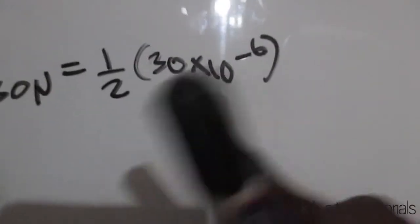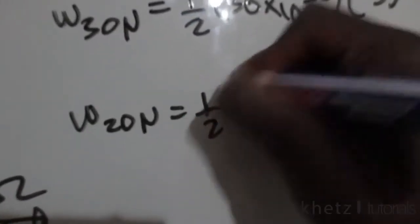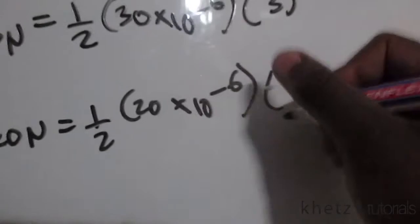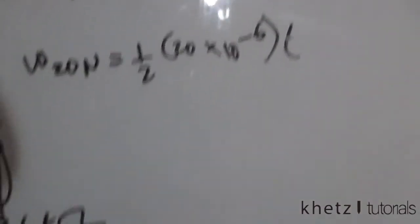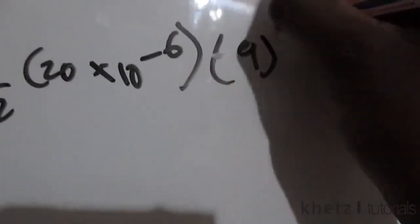For the 20 microfarad capacitor, we do the same thing: ½ times 20 times 10 to the minus 6, multiplied by the voltage value of v1, which is 9, so 9 squared.